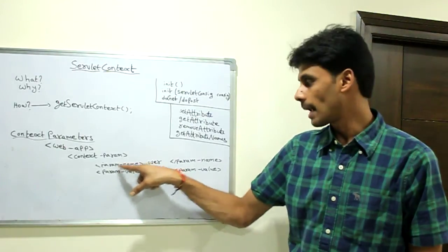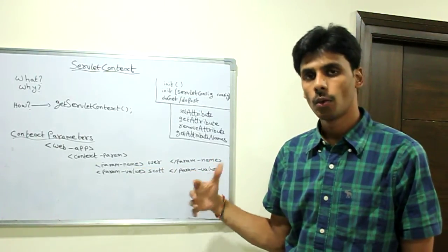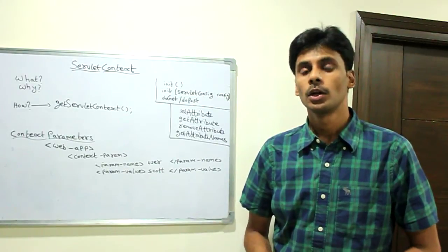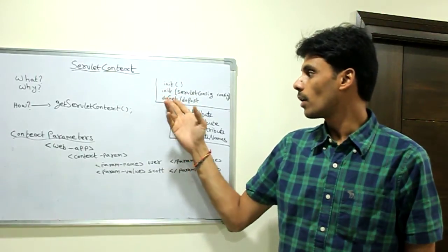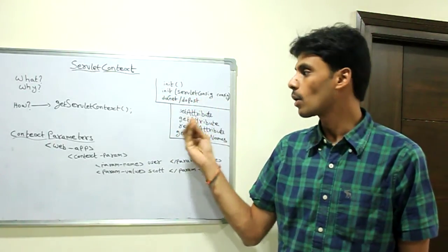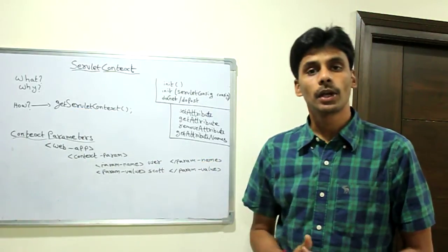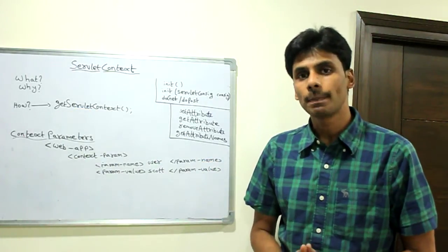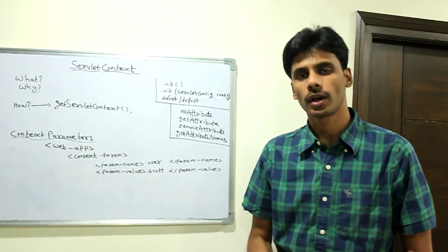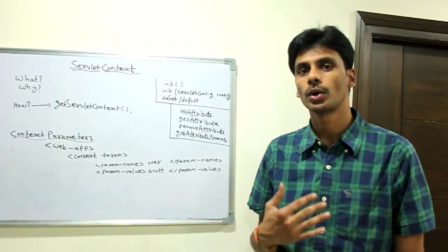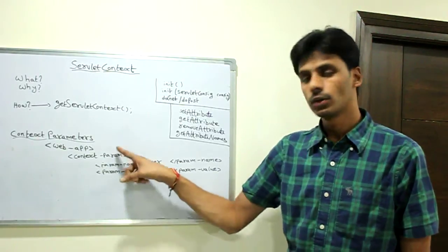They are name value pairs. Param name user is an example, param value Scott. Once we define them here, to retrieve them it's as simple as retrieving the init parameter. Inside our init method or doGet/doPost, you can call context, once you get the servlet context back, you can call context.getInitParameter, pass the name, and you get the value. You can retrieve your database information or any other information that you want to share across the application.